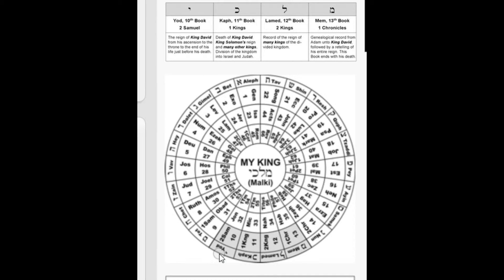Looking at the 10th letter to the 13th letter spelled backwards is the word Meleki, meaning 'my king.' The books on the first cycle that relate to those letters are 1 Chronicles, 2 Kings, 1 Kings, and 2 Samuel — the books of Kings. 2 Chronicles is found on the 14th spoke and 1 Samuel on the 9th spoke, and these four letters are actually the four middle letters of the Hebrew alphabet.